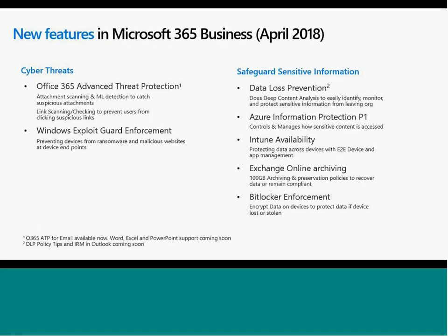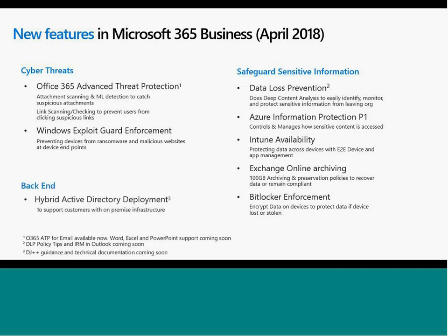Microsoft 365 Business added a range of features in April: Advanced Threat Protection — generally a $2.50 add-on for most users — Windows Exploit Guard Enforcement, and Data Loss Prevention, which prevents leaking of things like tax file numbers and Medicare numbers outside the organisation. We also get Azure Information Protection P1, which allows us to put rights management on documents, Intune to manage all devices, unlimited archiving through Exchange Online Archiving extending the standard 50 GB mailbox to effectively unlimited, BitLocker Enforcement, and support for Hybrid environments was also added in April.